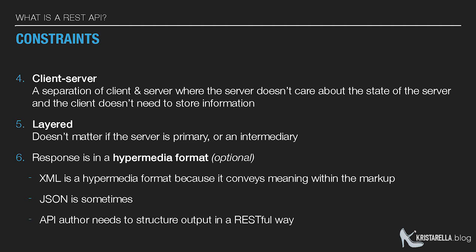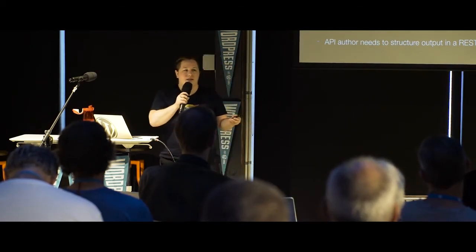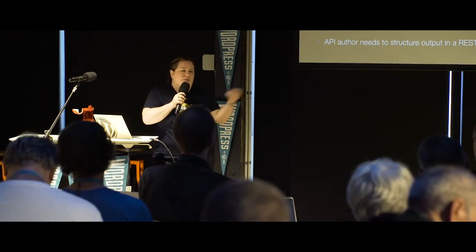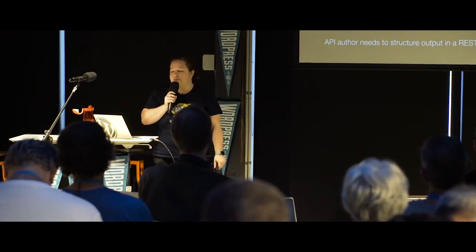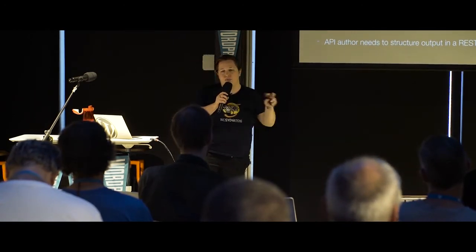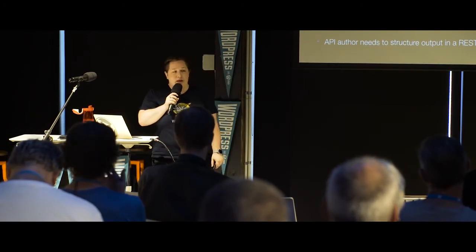A REST API should have a separation of client and server — the server doesn't really care who the client is, and the client doesn't need to store information. Similar to statelessness, it doesn't matter if the client has made 10 or 20 requests. It should also be layered — it doesn't matter if you're accessing the original source of the information or through an intermediary server, such as a CDN. Your information could be stored multiple levels down and the API doesn't care.